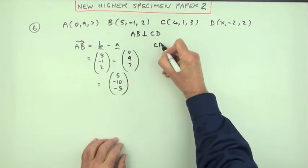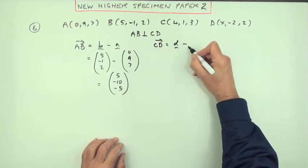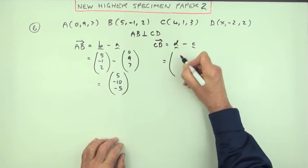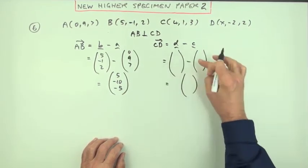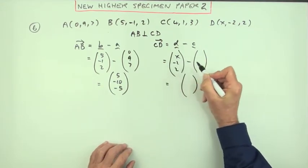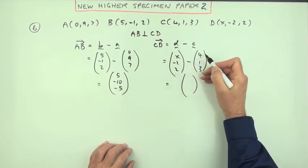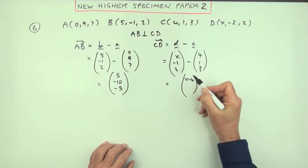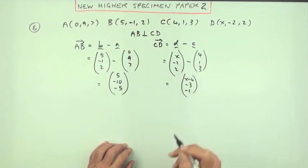Same for CD. That will be position vector D minus the position vector of C. So you just put down this routine again. What have we got? X, negative two, two, four, one, three. X take away four—I should have left myself more room there. Negative two take away one is negative three, two take away three is negative one. That's a mark each.